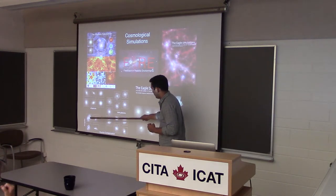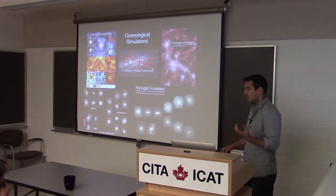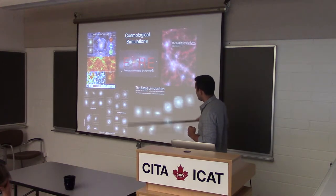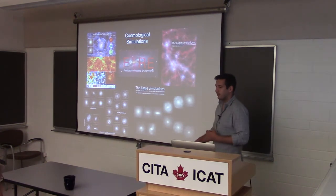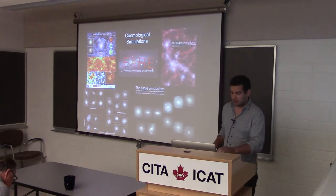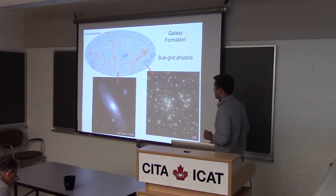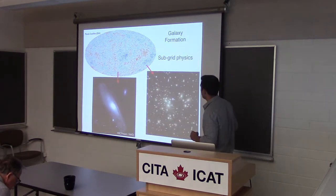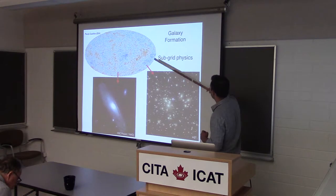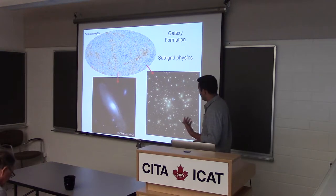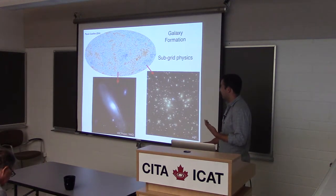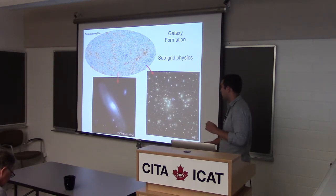When we do this simulation starting from initial conditions to try to get these objects, we have to include things that simulators like myself call subgrid physics. That means some model that you hope resembles physics way below the resolution scale that you just can't resolve in your simulation—something you have to resort to given the limited computer power and resources we have.